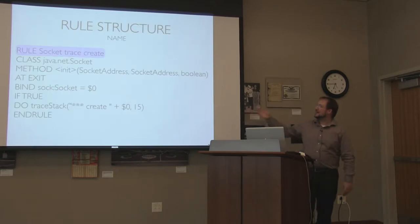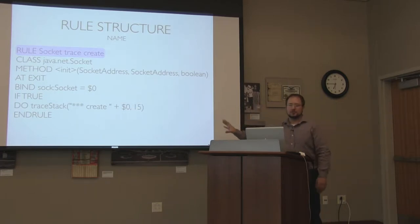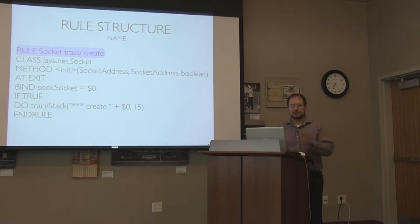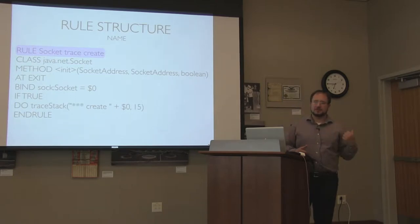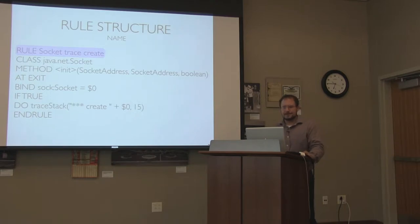What you have in front of you is the basic atomic component of a ByteMan rule. With ByteMan libraries, this rule can be syntax-checked against your source code using a Maven plugin or an Ant task. Rules have a name - it's basically the primary key. If you try to insert the same rule twice, it's just going to overwrite the rule.